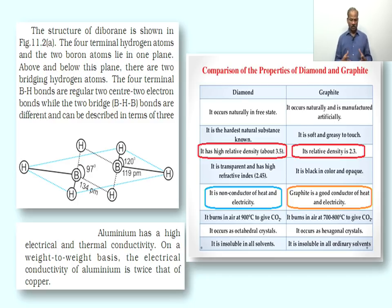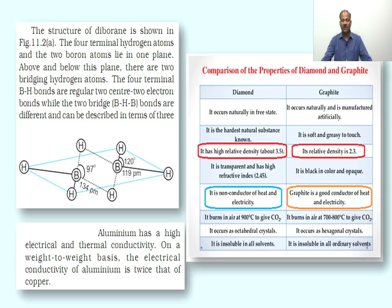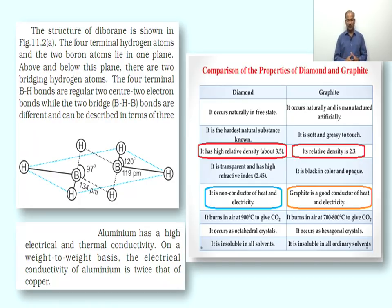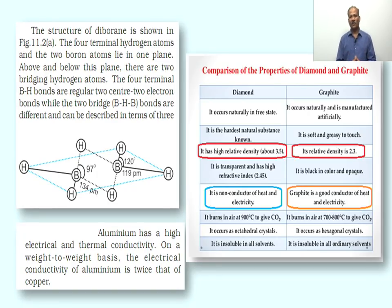In Group 14, comparison of properties of diamond and graphite is an important part. Regarding density: diamond has a relative density of about 3.5 and graphite has a relative density of 2.3, so the density of diamond is greater than that of graphite. Diamond is a non-conductor of heat and electricity, but graphite is a good conductor of heat and electricity. In diamond, the carbon–carbon bond is a single bond with bond order one, whereas in graphite the carbon–carbon bond order is nearly 1.5 due to partial double bond character.